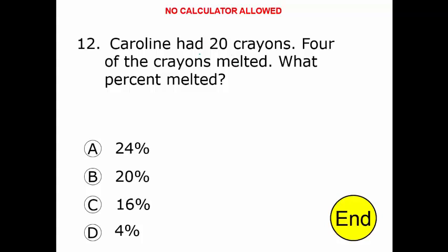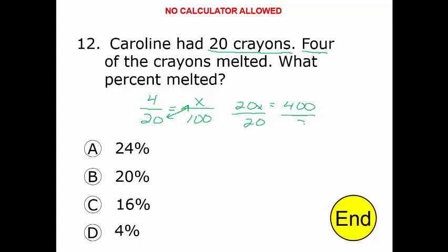Still no calculator here, so we need to solve this without one. Caroline had 20 crayons. Four of them have melted. What percent of them melted? The first thing we do is set up a fraction: 4 over 20. That's the fraction we need to convert to a percent. We set x over 100, then cross-multiply and divide. 20x equals 400. Dividing both sides by 20, one of the zeros cancels. 40 divided by 2 — x equals 20, or choice B.